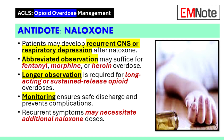Observation and monitoring after naloxone: Patients who respond to naloxone administration may develop recurrent central nervous system or respiratory depression and require longer observation periods before safe discharge. Although abbreviated observation periods may be adequate for patients with fentanyl, morphine, or heroin overdose, longer periods of observation may be required to safely discharge a patient with life-threatening overdose of a long-acting or sustained-release opioid.